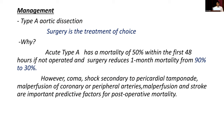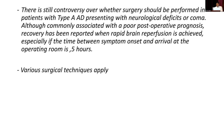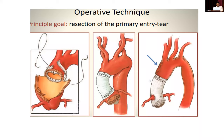In Type A aortic dissection, surgery is the treatment of choice. Type A has a 50% mortality within the first 48 hours if not operated; surgery reduces one-month mortality from 90% to 30% — very significant. The main purpose of surgery is resection of the primary intimal tear and repair. In the presence of visceral ischemia or neurological symptoms it is controversial, but studies show that surgery within five hours even with neurological symptoms has good outcomes.